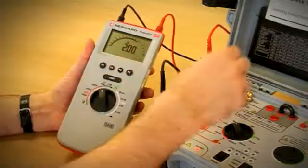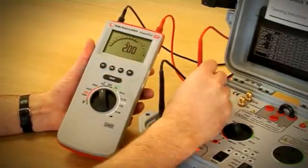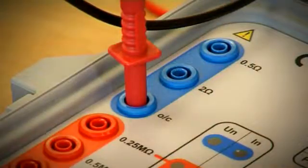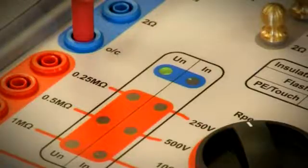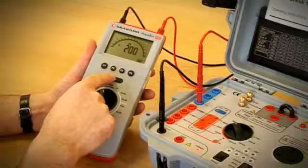To check the open circuit test voltage, move the red lead into the OC socket and press the test button on the tester. The UN indicator will illuminate if the open circuit test voltage is correct.